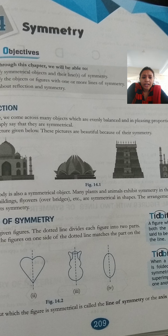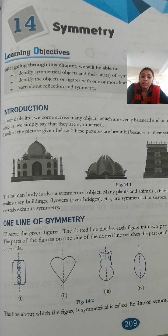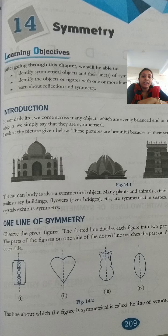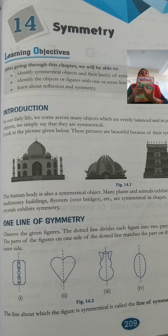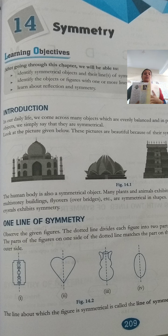Observe the given figures. The dotted line divides each figure into two parts. The parts of the figures on one side of the dotted line match the parts on the other side. For example, if you take this book page and fold it vertically, that is vertical symmetry. You can also fold it horizontally - that would be horizontal symmetry.